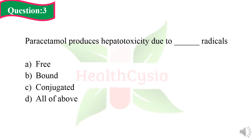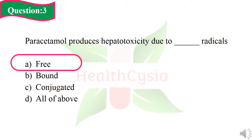Question 3: Paracetamol produces hepatotoxicity due to dash radicals. Option A: free radicals. Option B: bound radicals. Option C: conjugated. Option D: all of the above. The right answer of Question 3 is that paracetamol produces hepatotoxicity due to free radicals — Option A, free radicals.